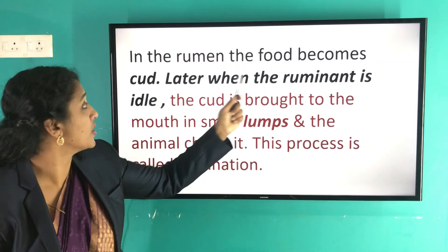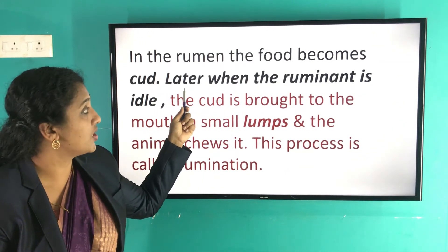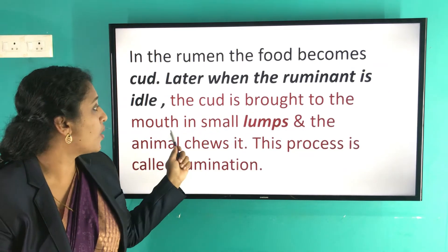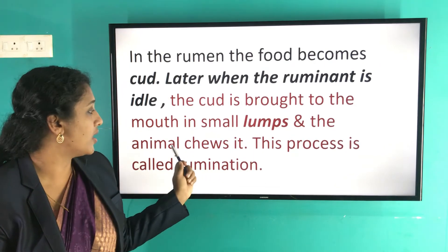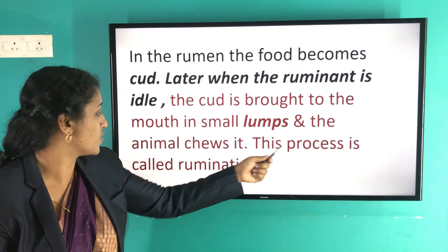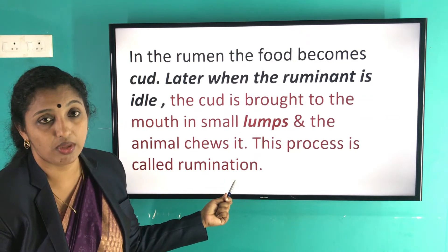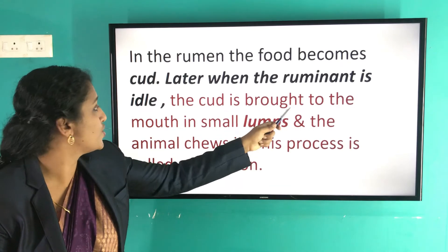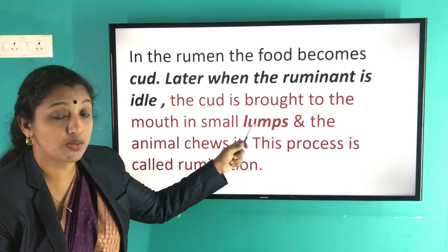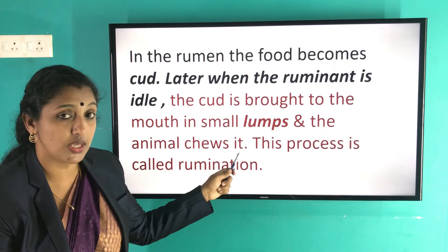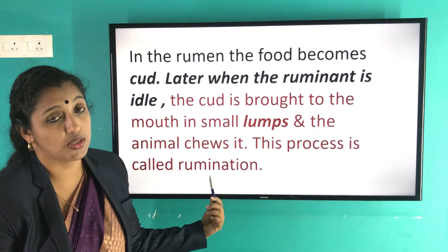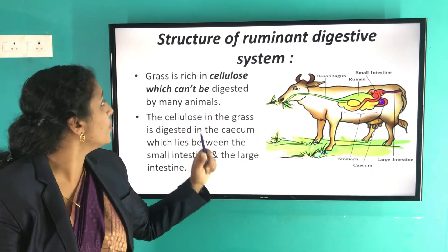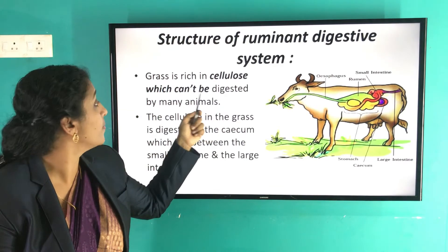In the rumen, the food becomes soft. Later, when the ruminant is idle, the softened food is brought back to the mouth in small lumps and the animal chews it. This process is called rumination. The grass is rich in cellulose, which cannot be digested by many animals.